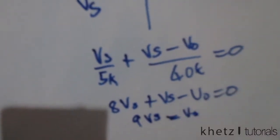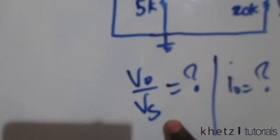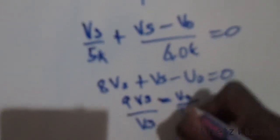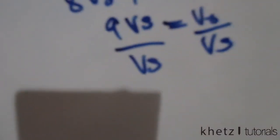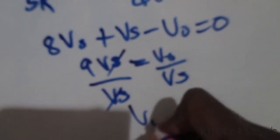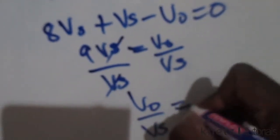We are asked to find the closed loop gain vo divided by vs. After doing this, you can basically see that dividing by vs on both sides, this will cancel out, which means vo divided by vs equals 9. That is your answer for the closed loop gain.